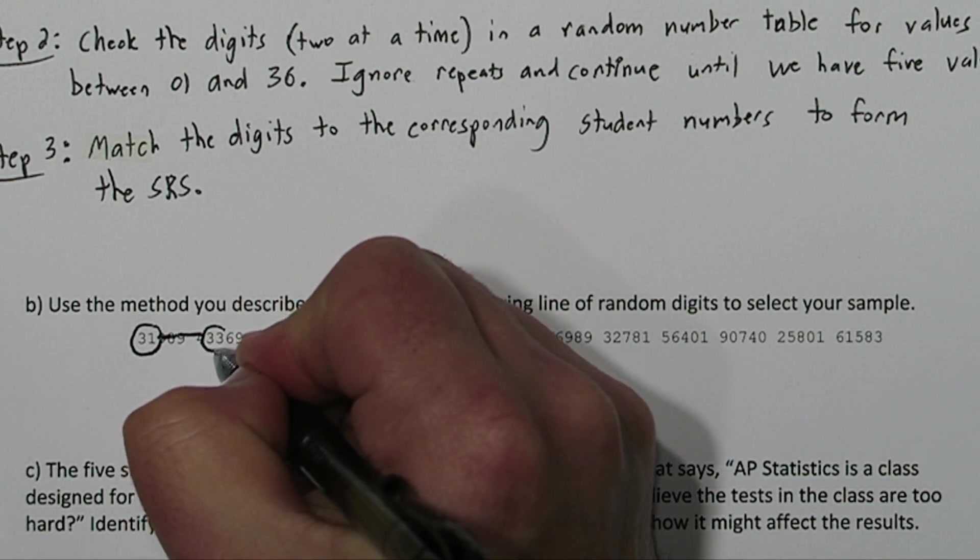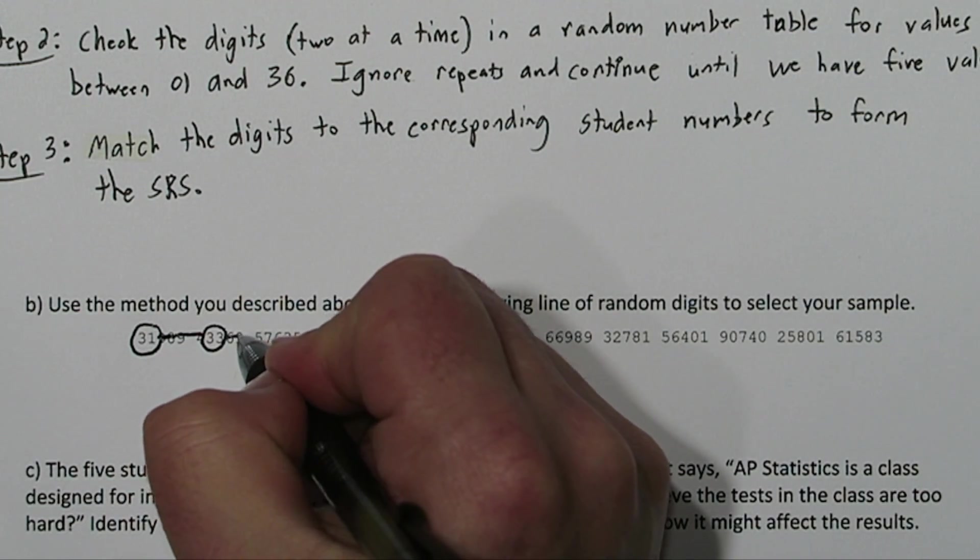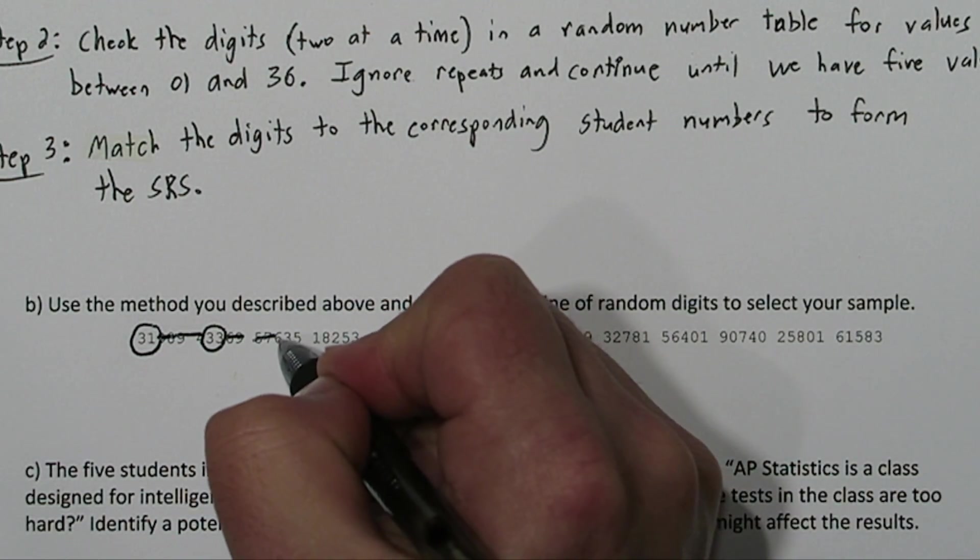69 exceeds our interval of digits. So does 57. So does 63. And so does 51.